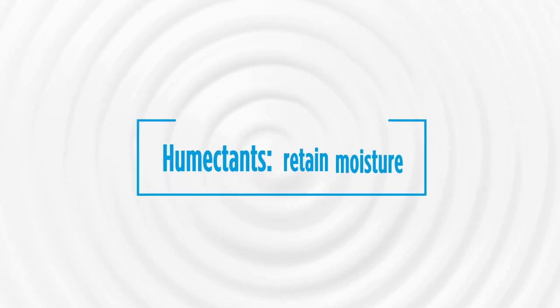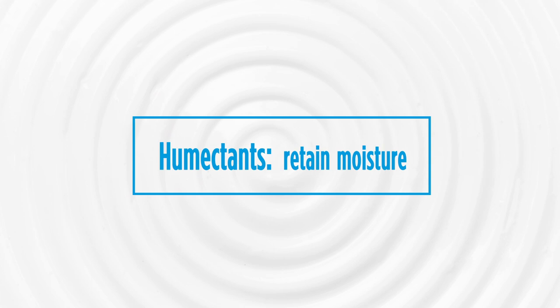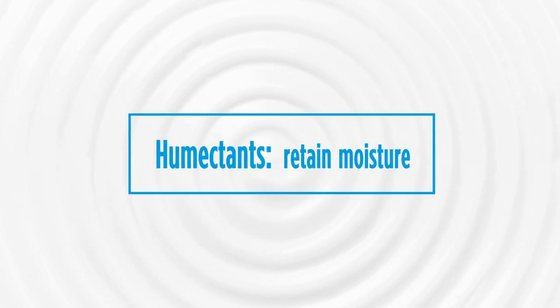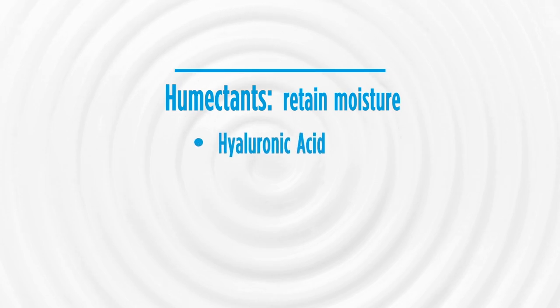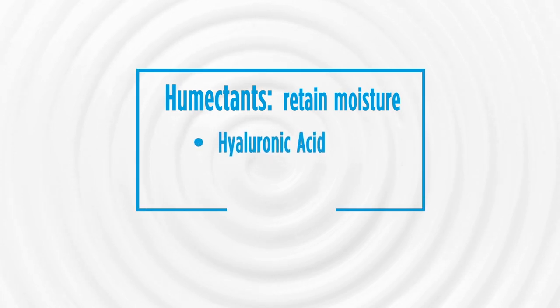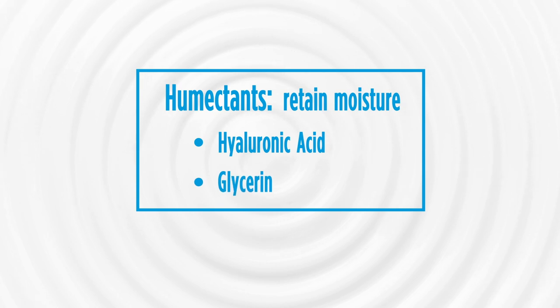The second type of ingredient you need in a moisturizer is a humectant — that's a sponge. Because when you trap water in the skin, you have to hold it there. The body has natural humectants present down in the second layer of skin known as the dermis. The most important humectant in the body is hyaluronic acid, but there are others such as glycerin, which are also important.